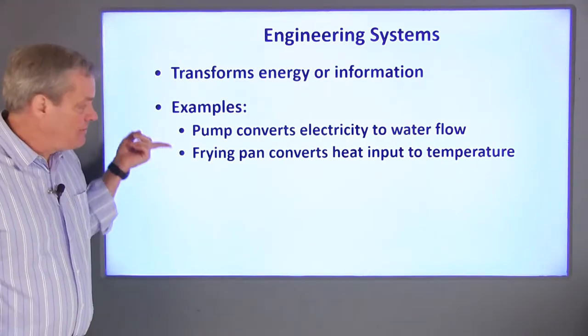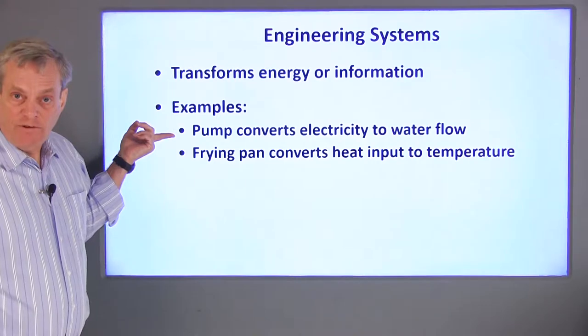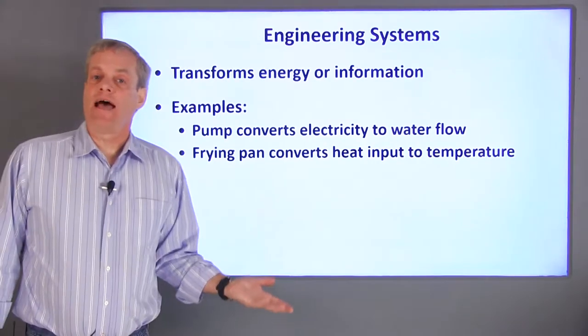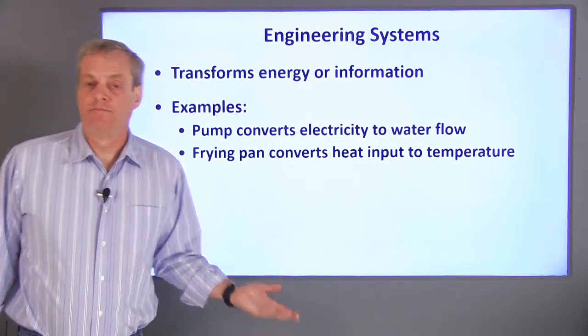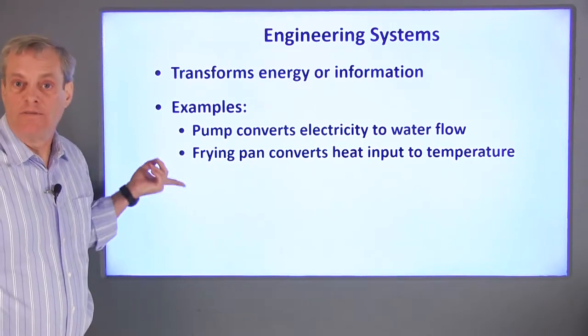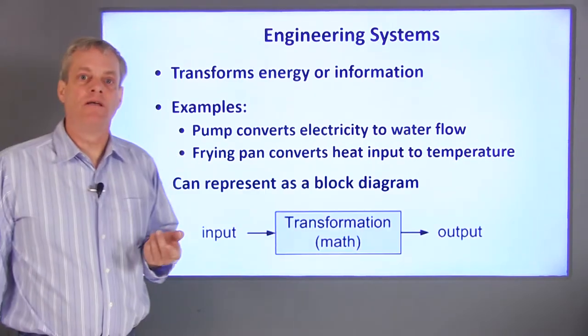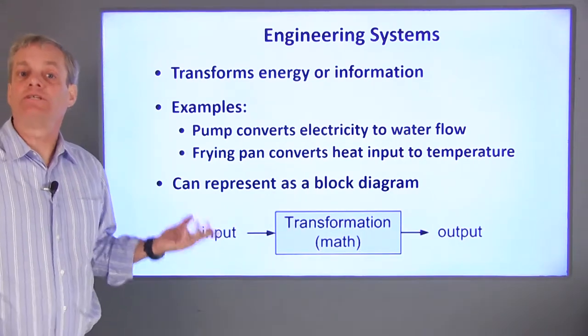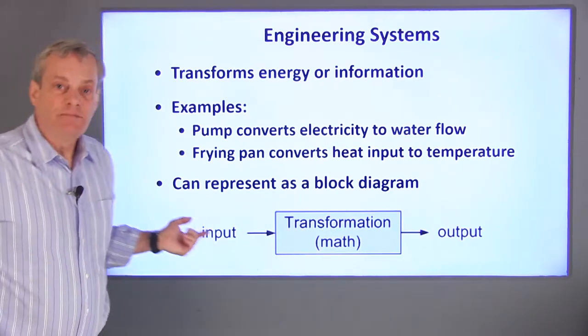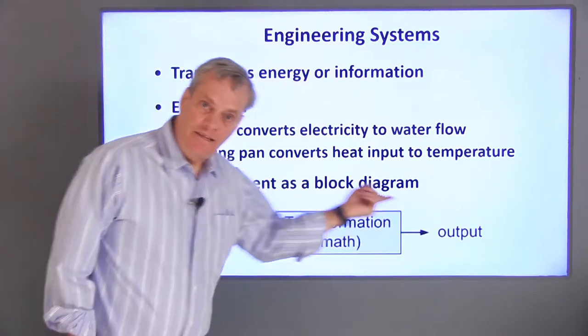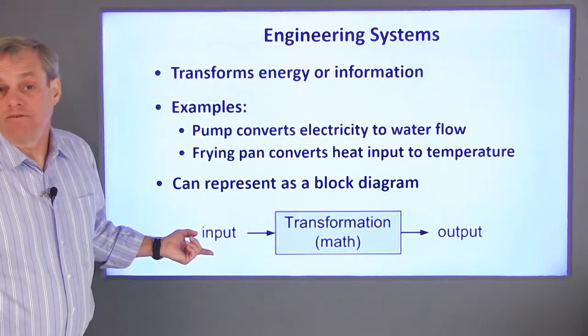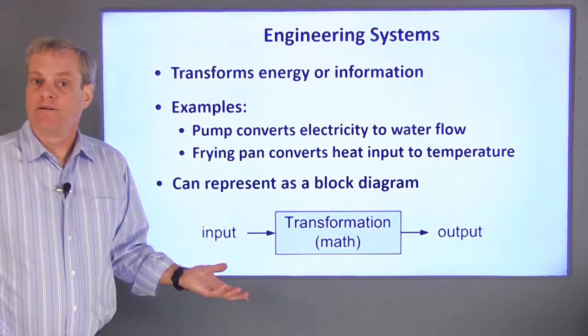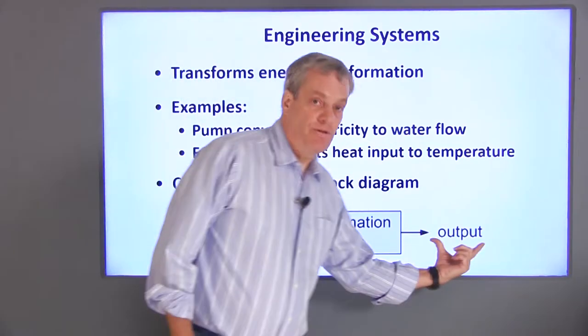As engineers, we need to be able to predict how this energy transfer happens so that we can make it happen as efficiently as possible. To do this, we build mathematical models to describe the energy transfer. The model is based on an identification of what we consider to be the inputs and outputs of the system. Sometimes it's convenient to represent this in what is called a block diagram. On a typical block diagram, arrows represent the input and the output.